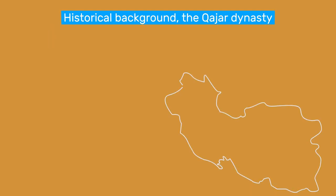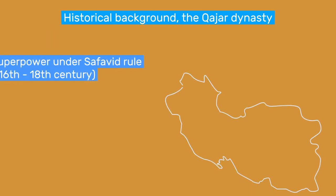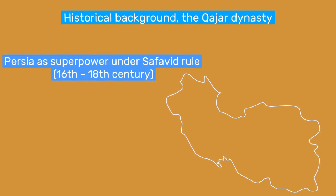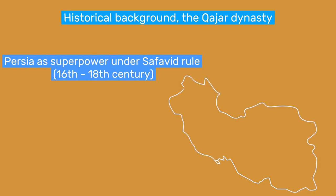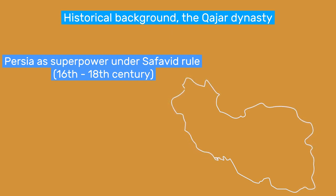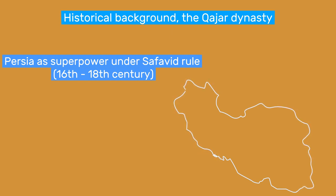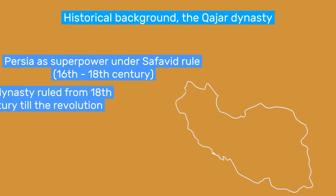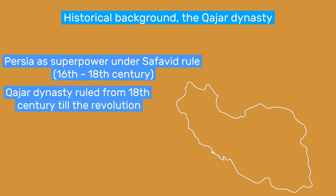Persia was often the cradle of expansive empires. However, in the 18th century, the great Safavid dynasty, which had ruled Persia from the 16th century, collapsed. From the rubble, many competing realms emerged, with the Qajar dynasty coming out on top.